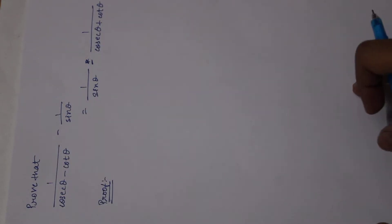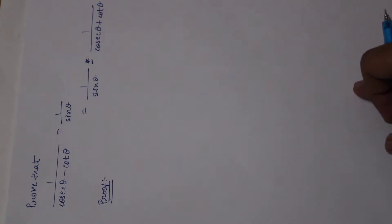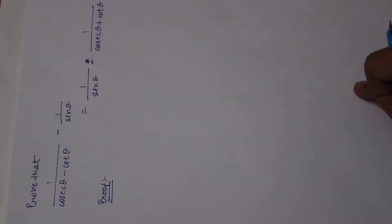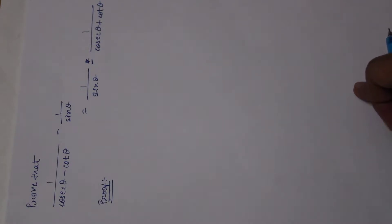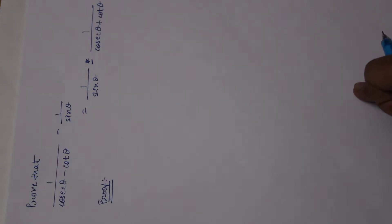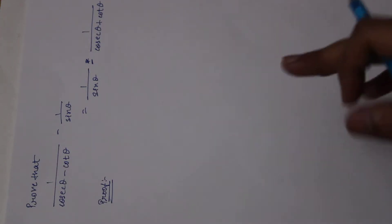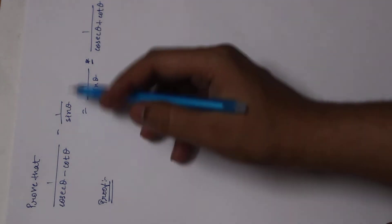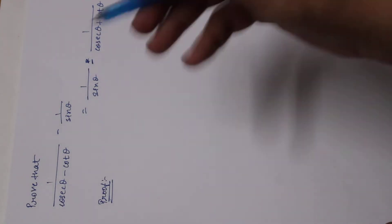Hi guys, so this is our fifth sum on trigonometric identities. The question here is: prove that 1 upon cosec theta minus cot theta minus 1 upon sin theta equals 1 upon sin theta minus 1 upon cosec theta plus cot theta. In this kind of sum, rather than proving this part, I'll change my approach a little bit.